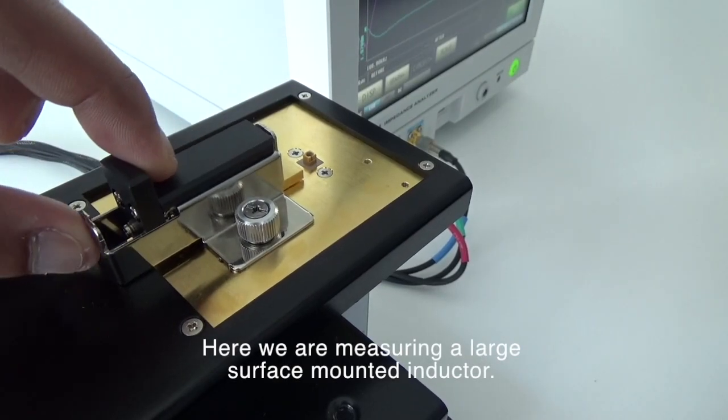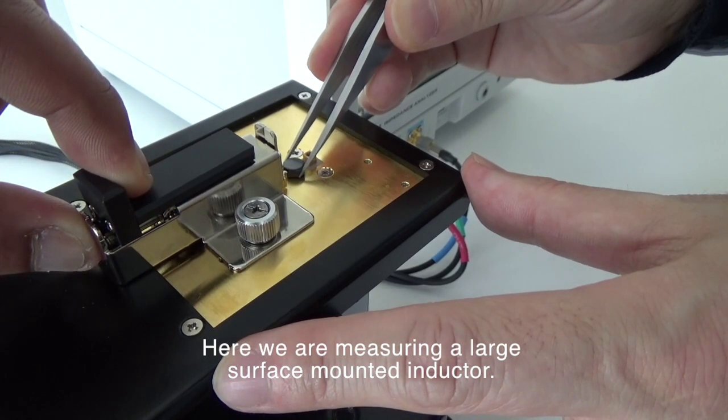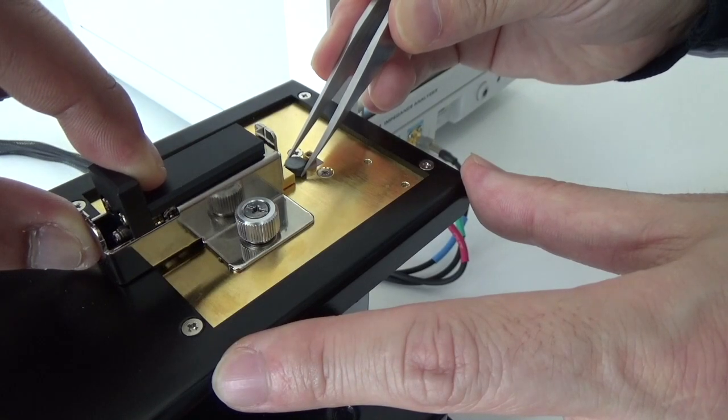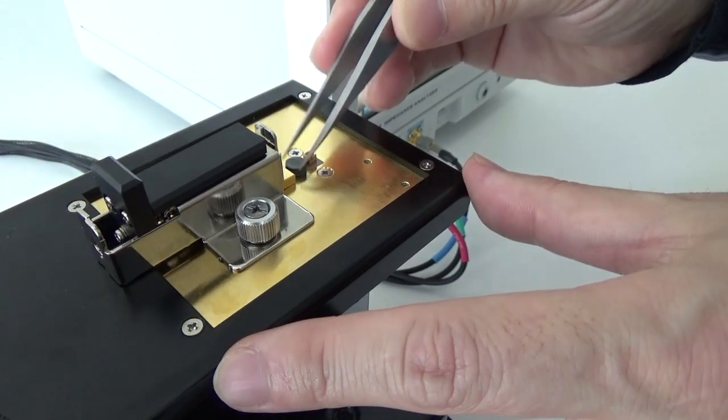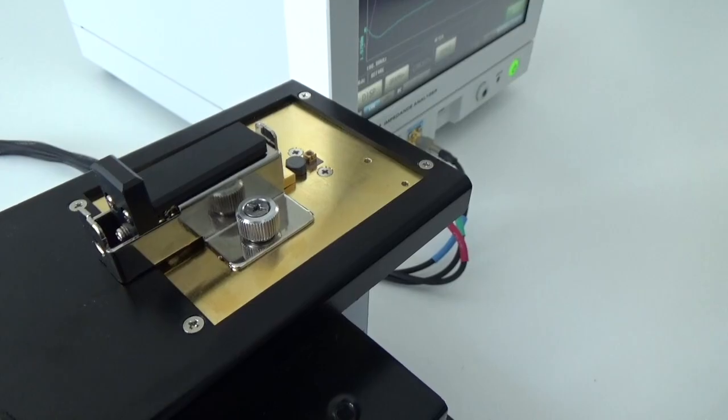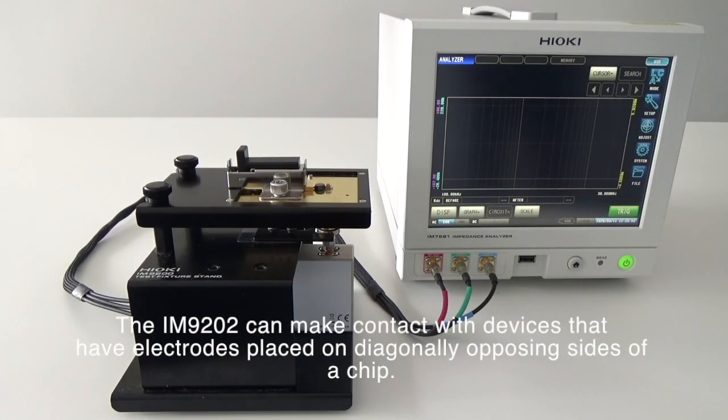Here, we are measuring a large surface-mounted inductor. The IM9202 can make contact with devices that have electrodes placed on diagonally opposing sides of a chip.